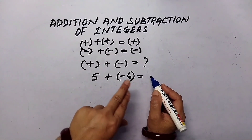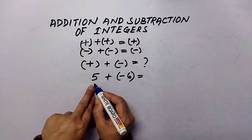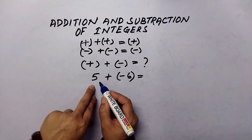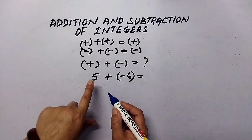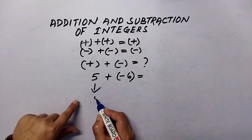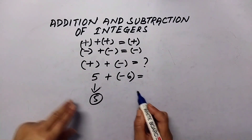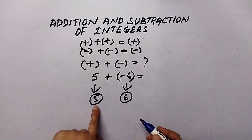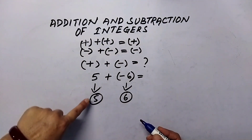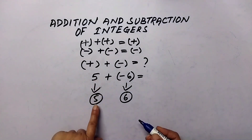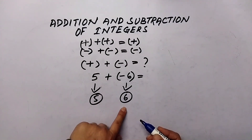What should the sum be and what should the sign of the sum be? Here we use absolute value — which I already explained in the last video, but let me explain again. Absolute value means only the numerical value; ignore the sign. The absolute value of five is five, and the absolute value of negative six is six. Whose absolute value is more? Six, because six is greater than five.